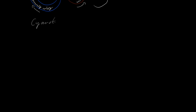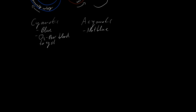First, some general differences: in cyanotic heart disease, you become blue; in acyanotic, you do not become blue. In cyanotic heart disease, oxygen-poor blood enters the systemic circulation, leading to a bluish color because there is a lot of deoxyhemoglobin, which is darker than oxygenated hemoglobin. Usually this blue color occurs at an O2 saturation below approximately 85%.